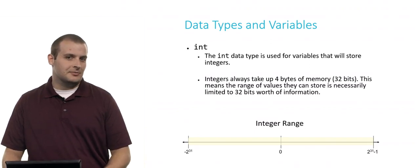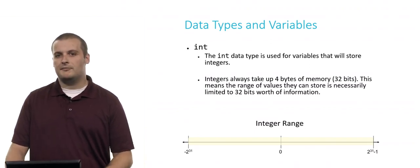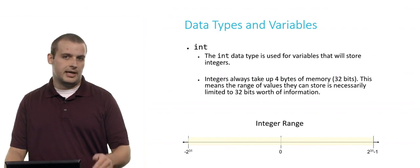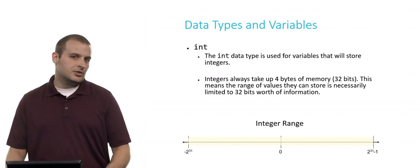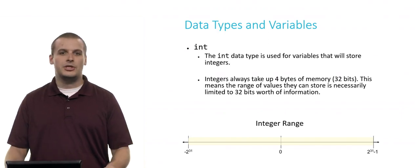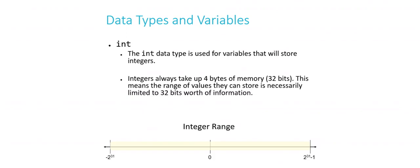Integers, which is something you should keep in mind for the quiz, always take up four bytes of memory, which is 32 bits. There are eight bits in a byte. So this means that the range of values that an integer can store is limited by what can fit within 32 bits worth of information. Now, as it turns out, it was long ago decided that we would split up that range of 32 bits into negative integers and positive integers, each getting half of the range. So the range of values that we can represent with an integer range from negative 2 to the 31st power to 2 to the 31st power minus 1, because we also need a spot for 0.